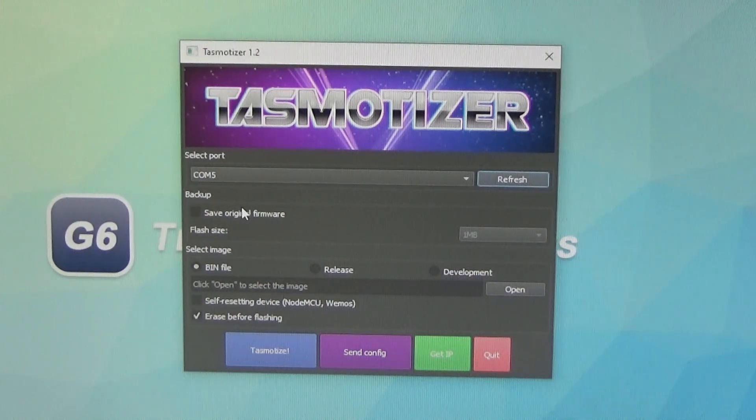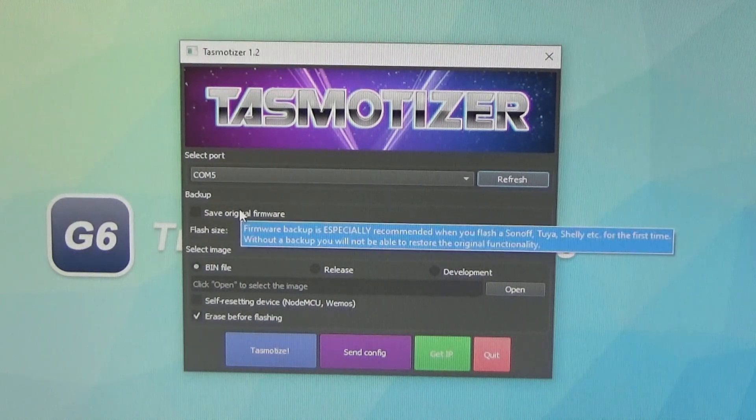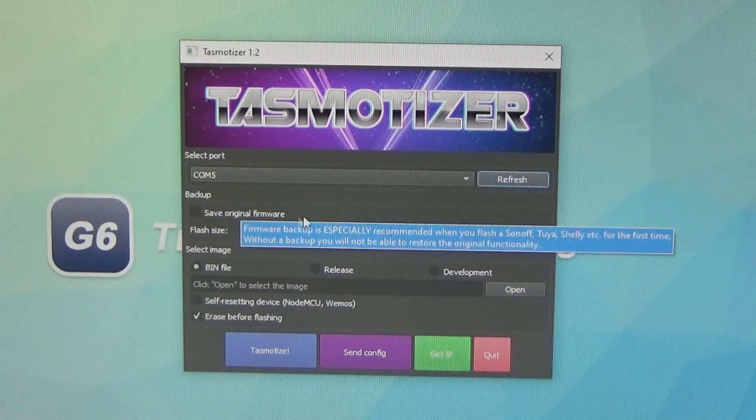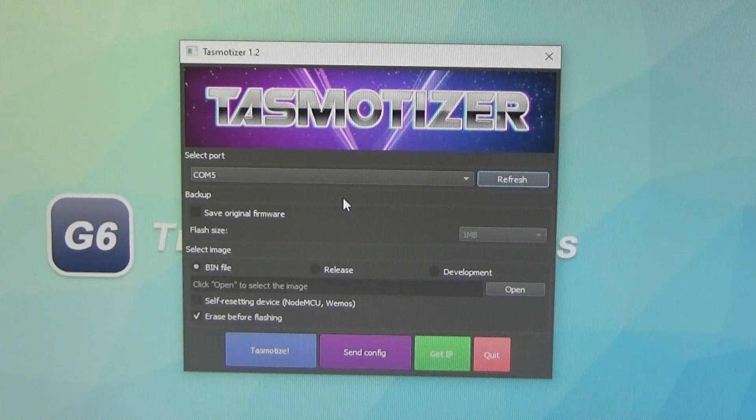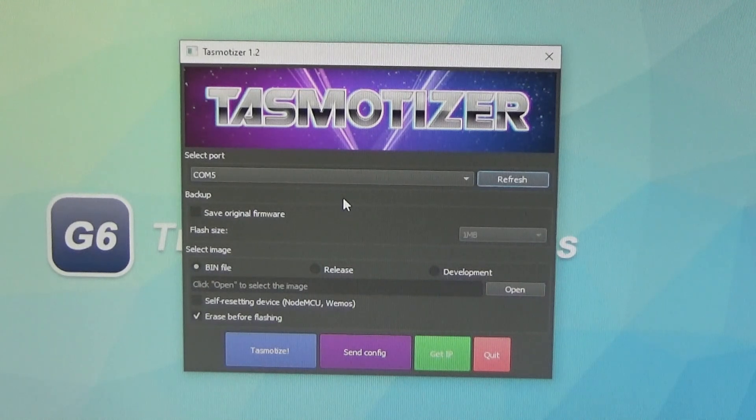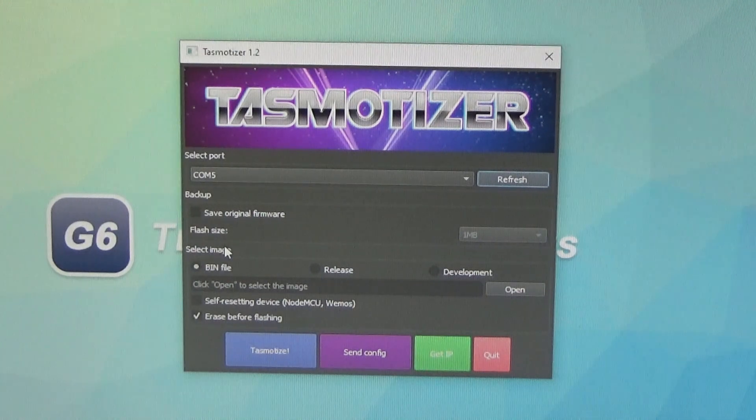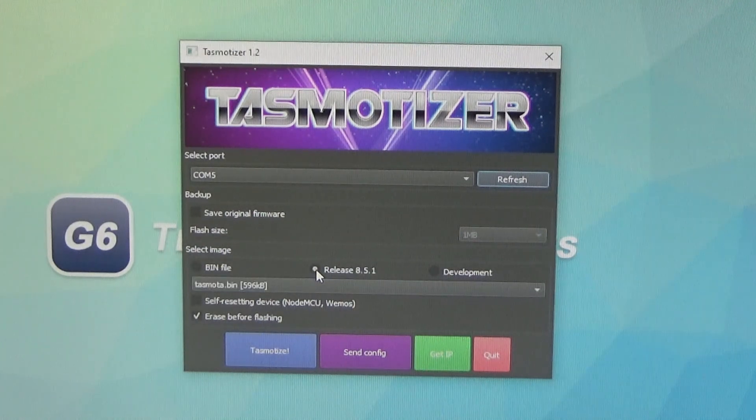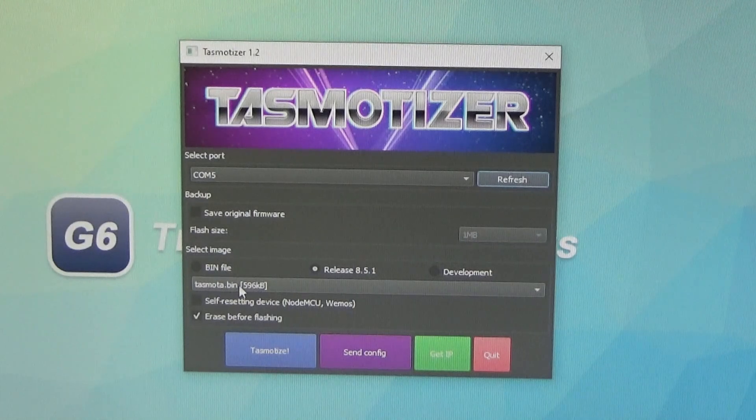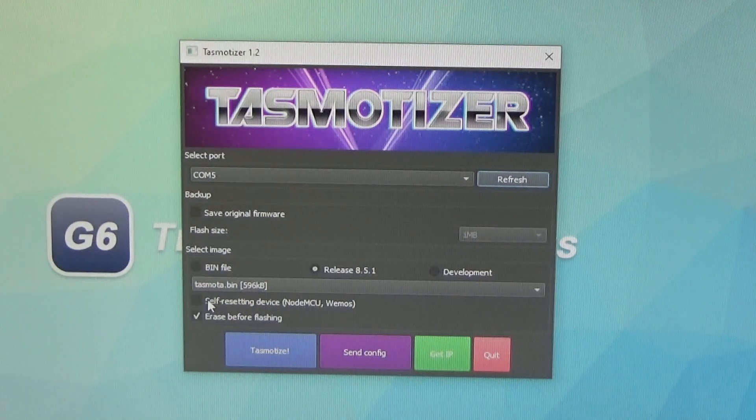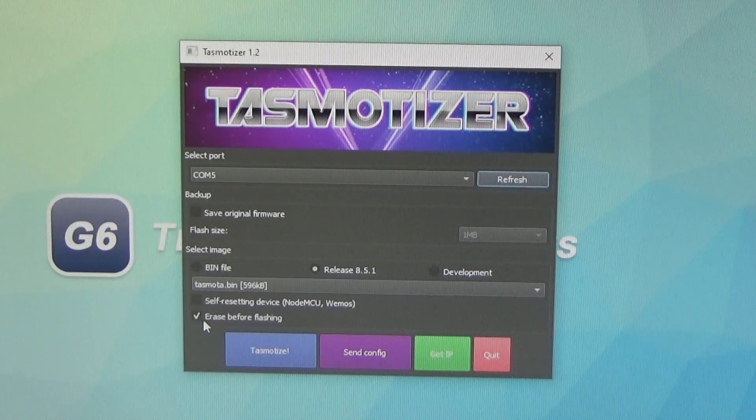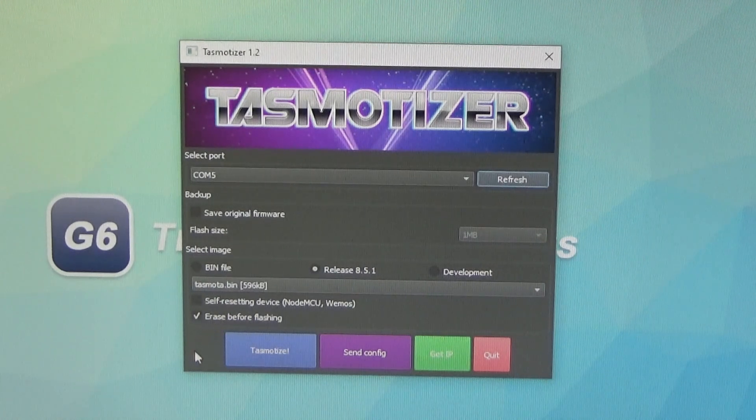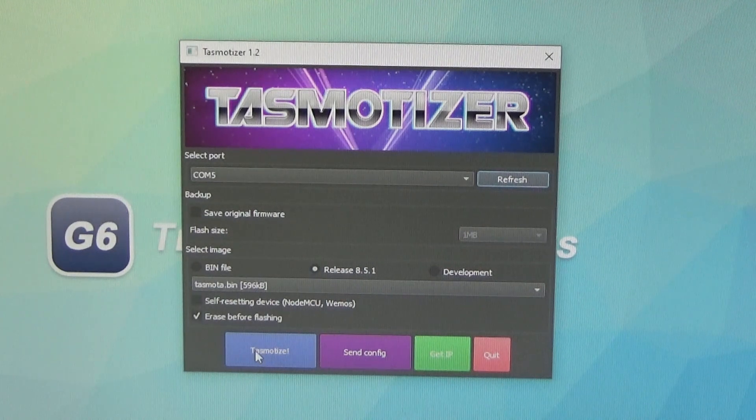Under backup, you can save the original firmware if you ever want to restore the Sonoff firmware back to the device. So they recommend that you do that. I have more of these that are not flashed yet if I need to grab it, so I'm not going to worry about it. Under select image, just go over to release. And then we'll just use Tasmota.bin. This device is not self resetting, so we leave that unchecked. And then erase before flashing. We want just click Tasmotize.